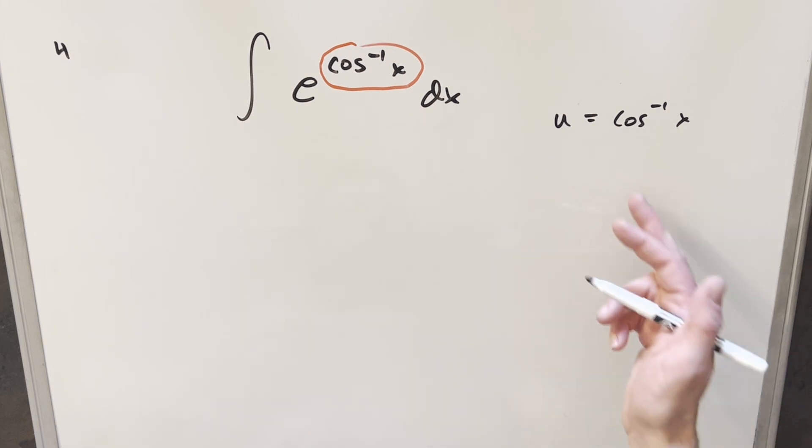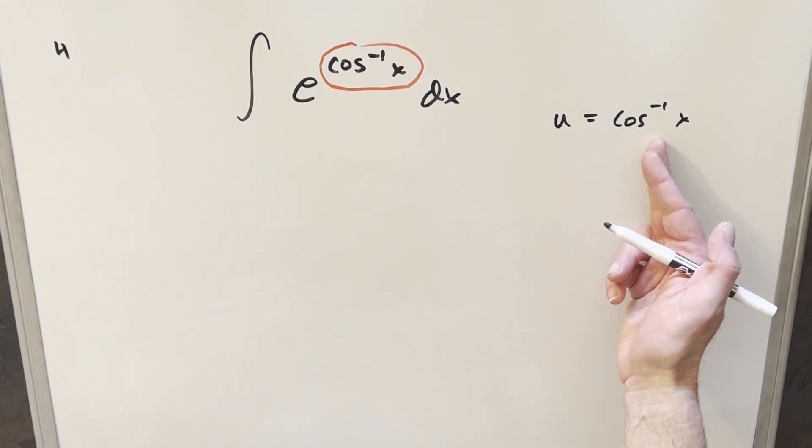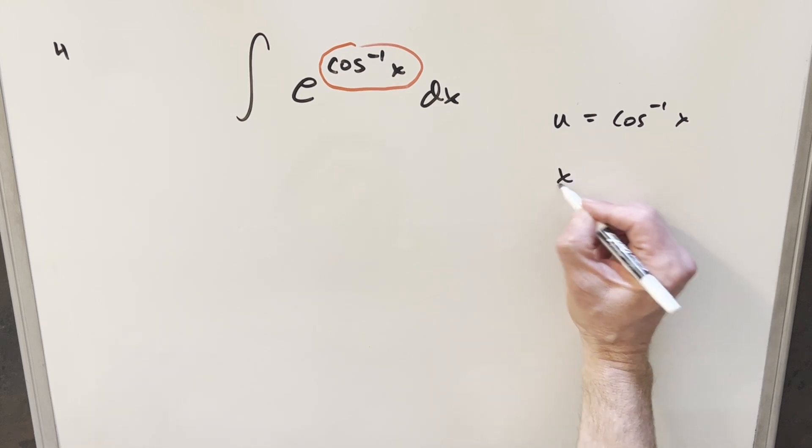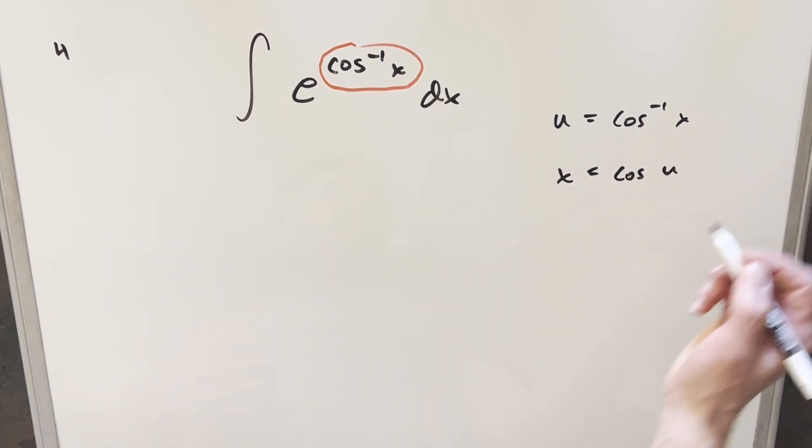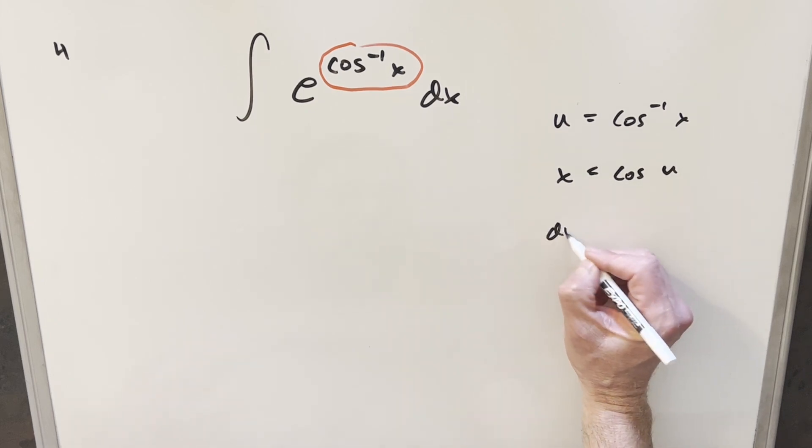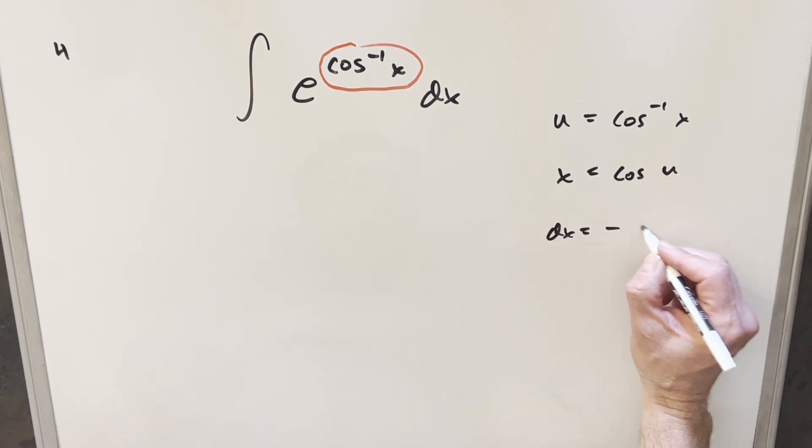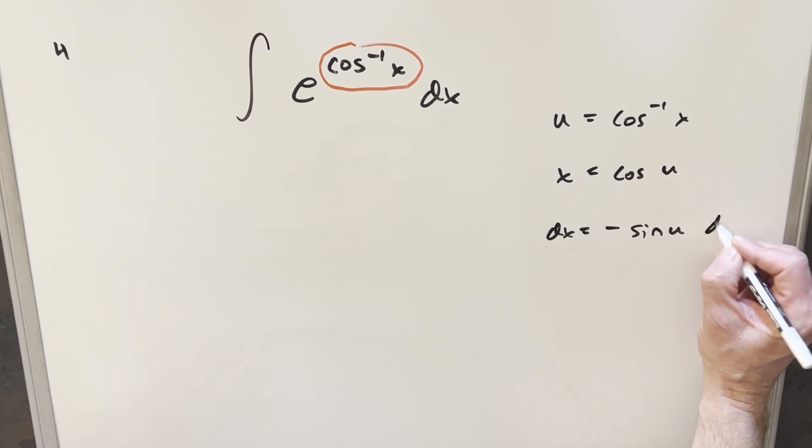So I'm going to just set my u equal to inverse cosine of x. And before taking the derivative, let's just take cosine on both sides in order to isolate the x. So just flipping this expression around, we end up isolating x, and we have x equal to cosine of u. I'll take my derivative here, so we're going to have dx, and this is going to become minus sine u du.